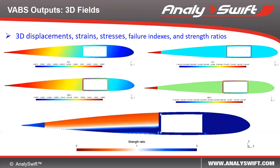Based on the loads computed from the one-dimensional beam analysis, VIPS can also compute the 3D displacement, strains, stresses, failure index, and strength ratios, as shown in this contour plot. Using this contour plot, one can quickly identify the critical areas that need to be redesigned.